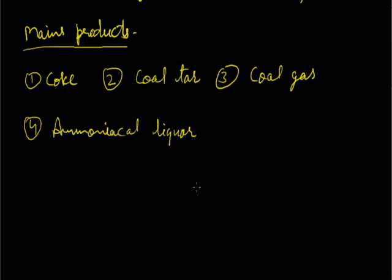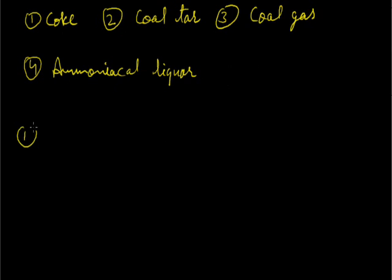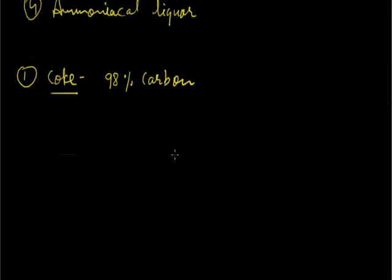Now we will discuss all these products one by one. The first is coke. Coke contains around 98% carbon. If we talk about its properties, it is porous because of the presence of air spaces, tough, black in color, and it is the purest form of coal.